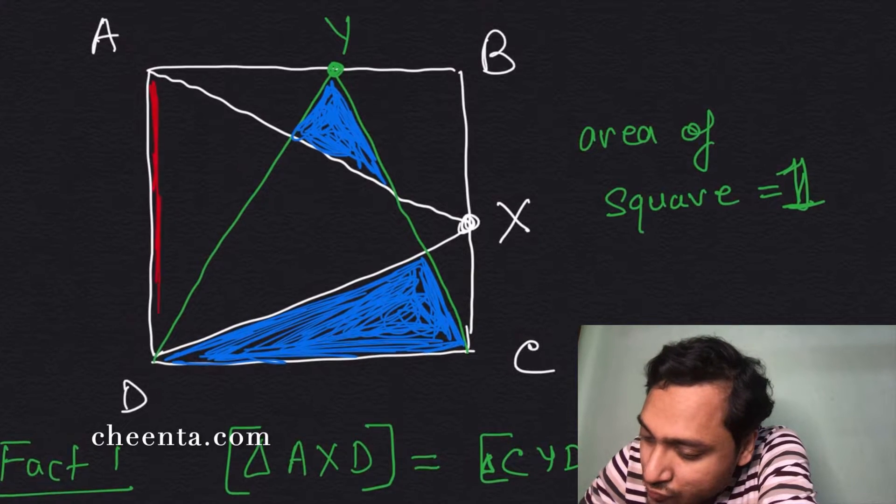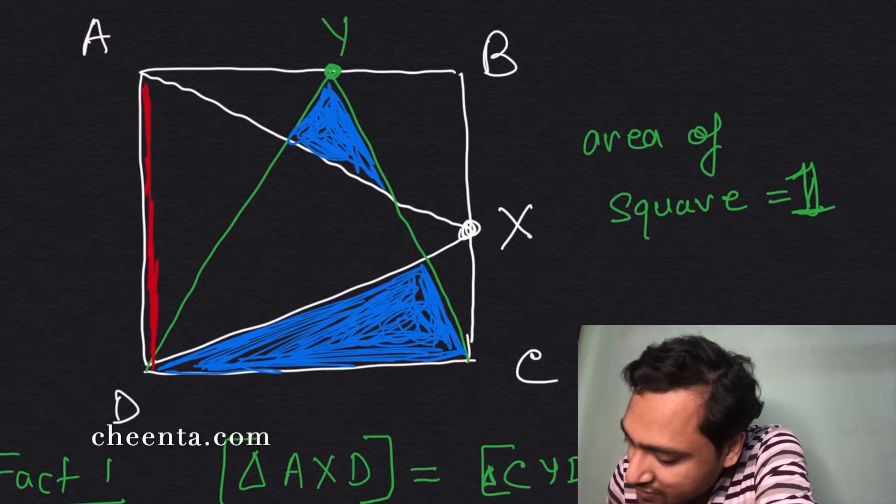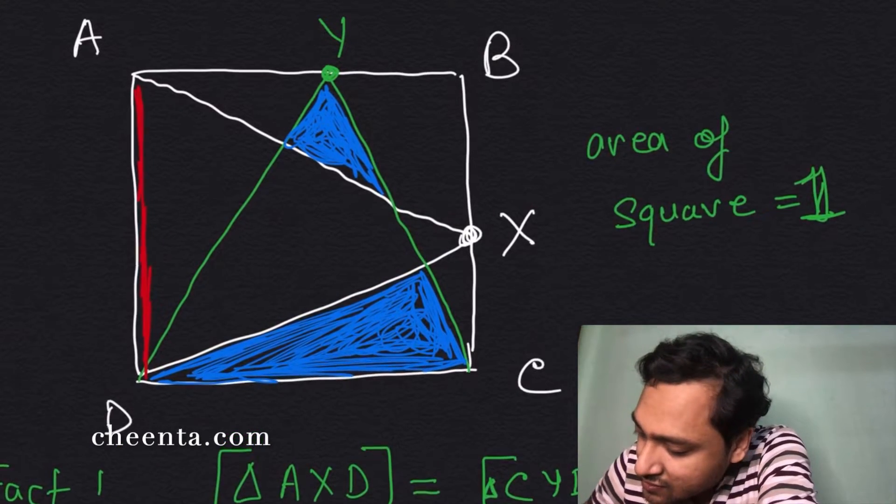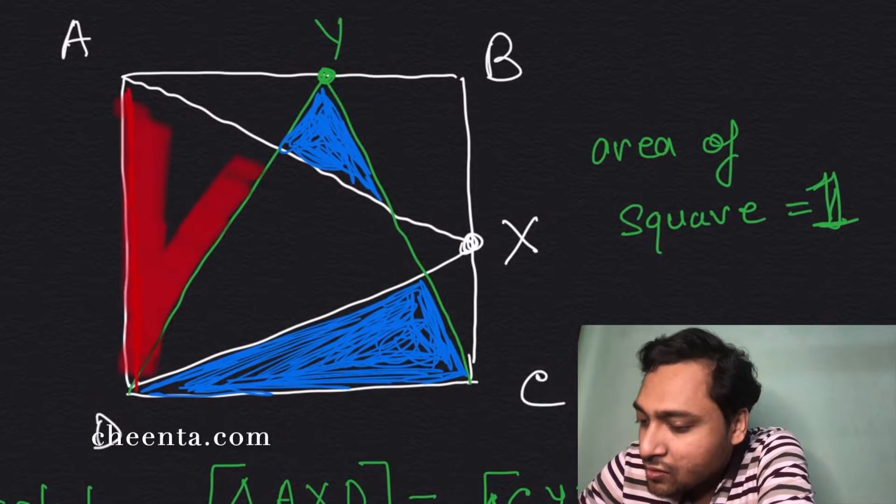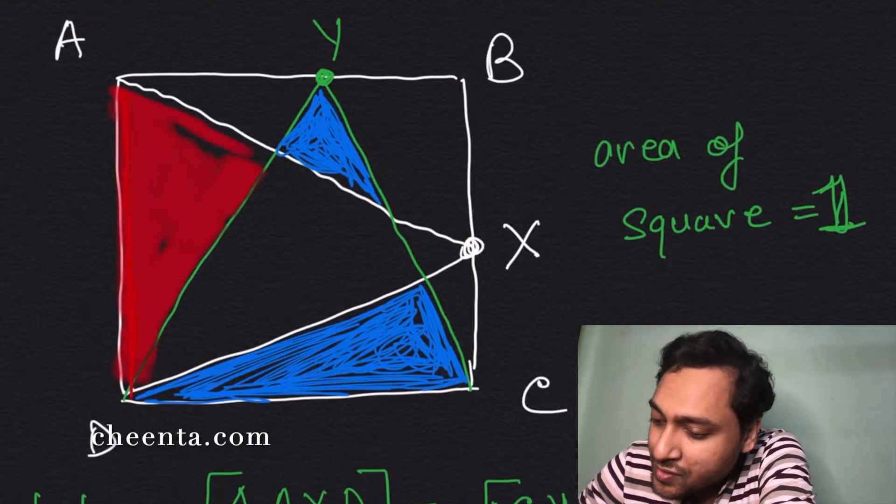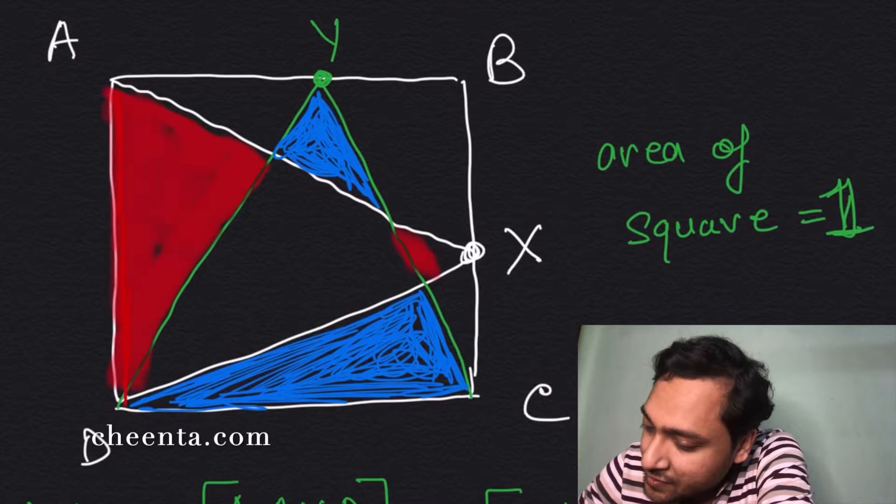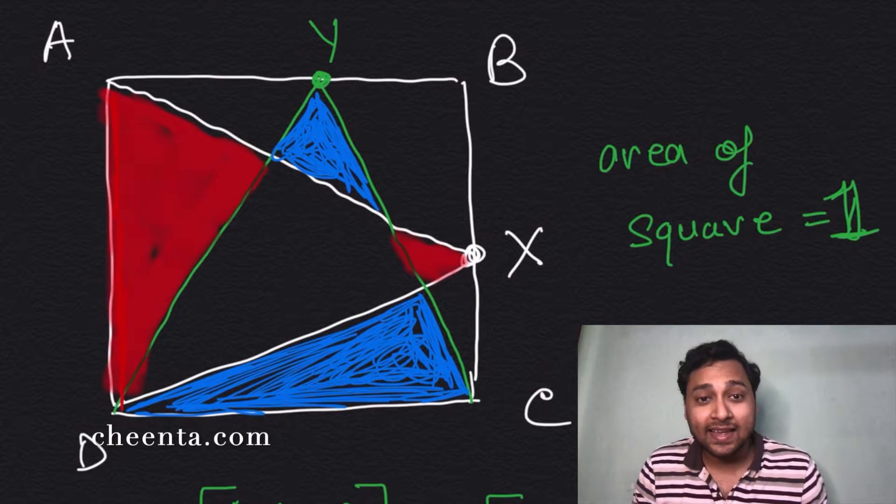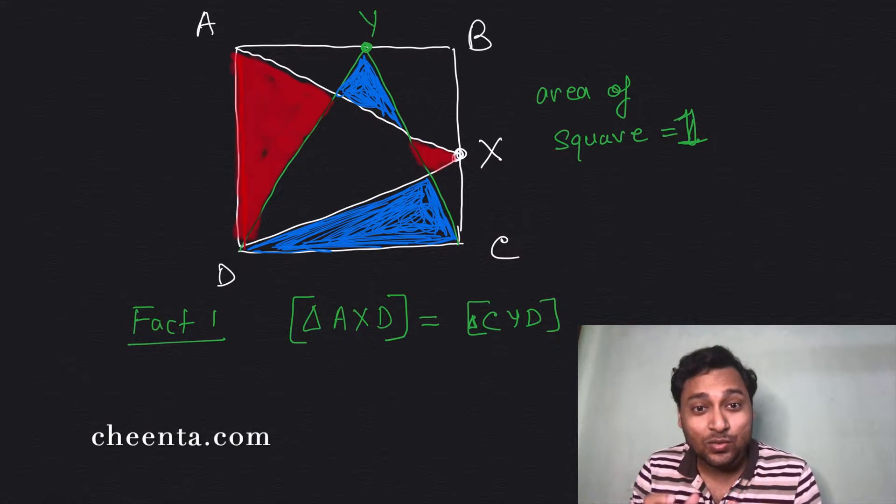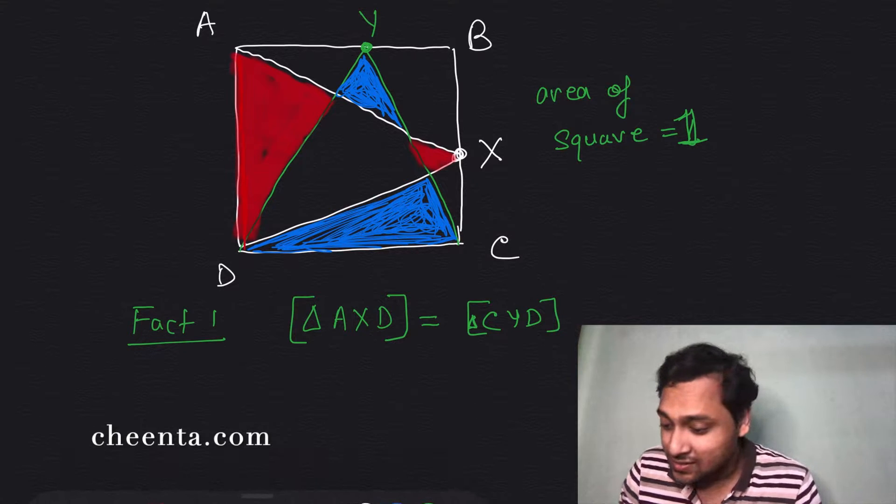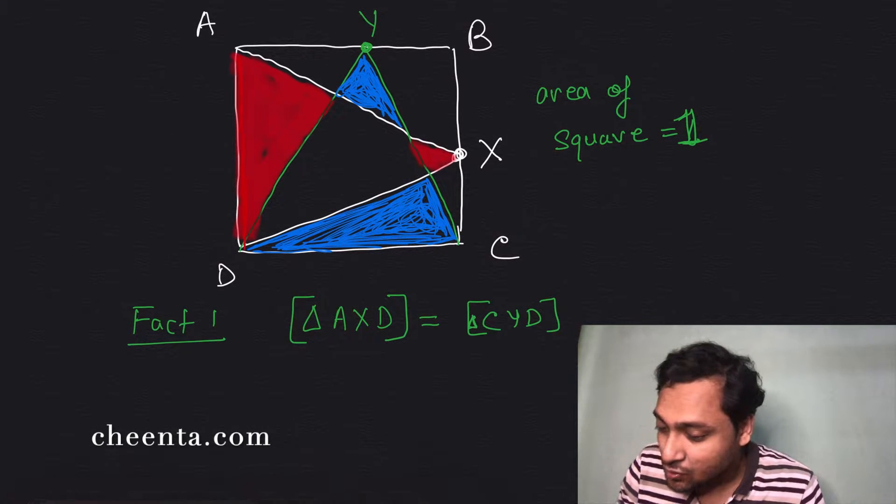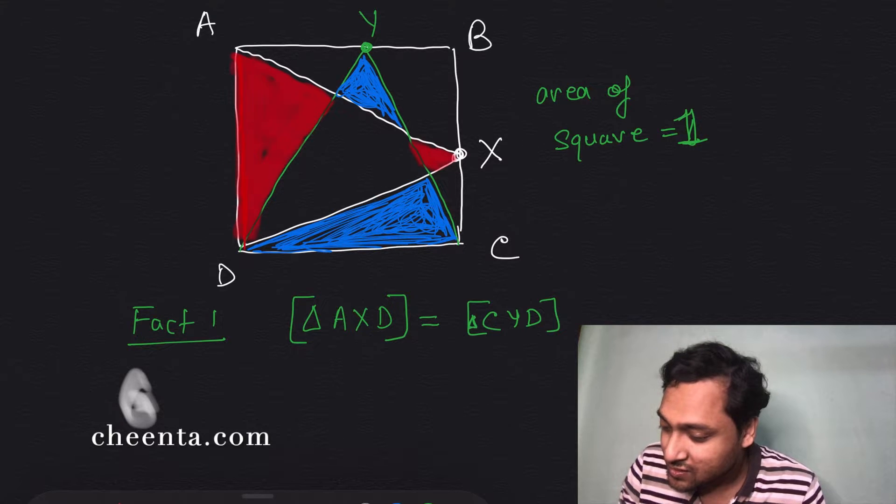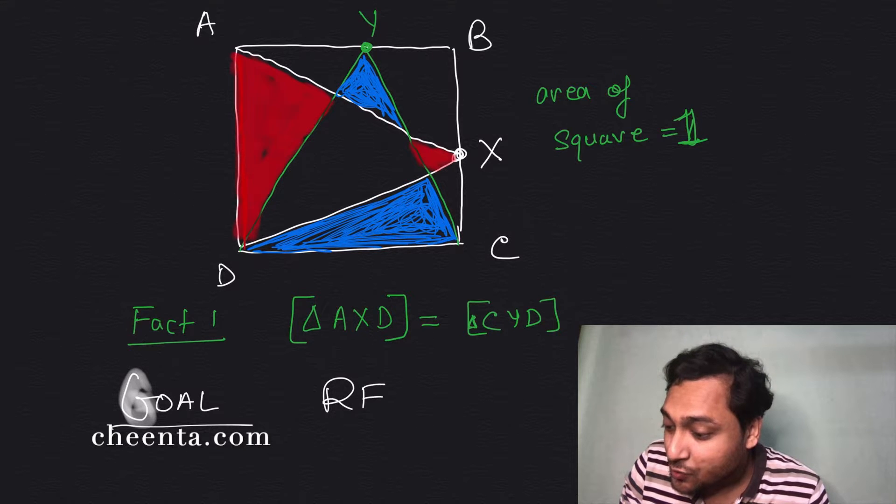And I'll color two red regions, so maybe I can use a thicker brush. Okay, here we go, a red region, and here is a red region. Okay, so the question says that the red region is equal to the blue region. So this is our goal, show that red is equal to blue.